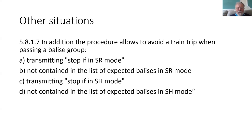Before we think about how override works, let's think of some other situations where the train trip might need to be overridden. That includes when you're going to pass over a Balise group with stop if in SR, or if you're in SR and not in the list of Balises for SR, and similarly for shunting stop if in SR — which in the specifications is described as danger for shunting — and not contained in the list of Balises for SR. So there are various situations where we want to be able to go past the location without a reaction; normally it would be an end of authority, but it could be one of these Balises.